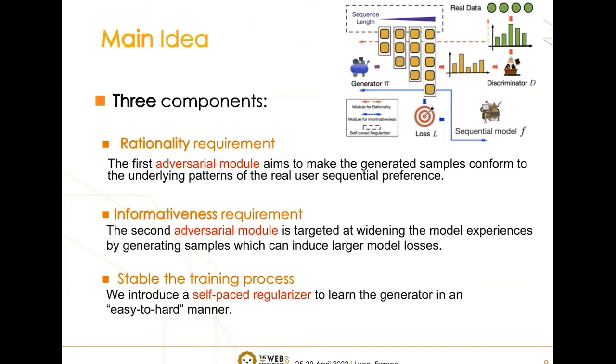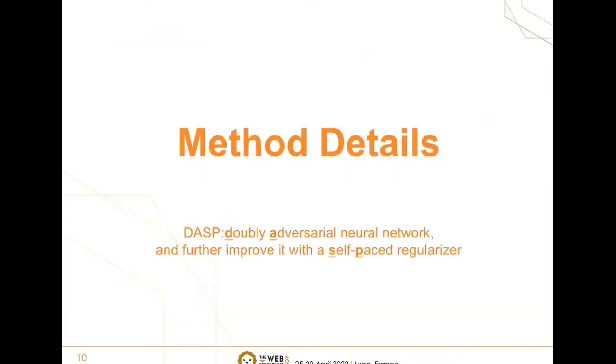In order to generate ideal samples, we design a doubly adversarial neural network, which is composed of three components. Now, I will delve into the details of our method.